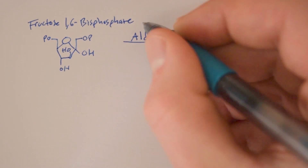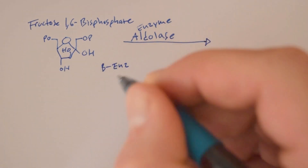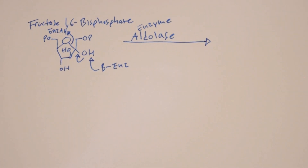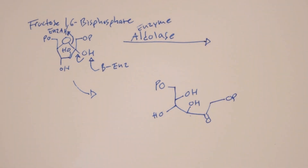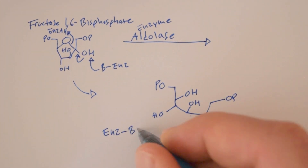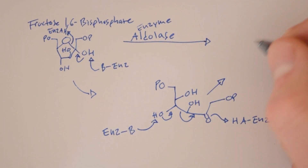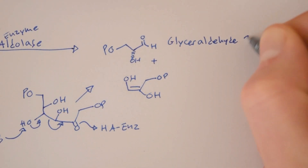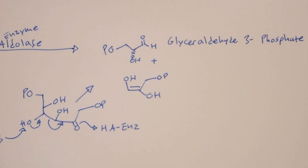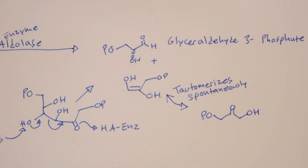Next, we have the enzyme aldolase. And after a step, we go to two products this time: glyceraldehyde 3-phosphate, which is what we're after, and another molecule that tautomerizes spontaneously, which is called dihydroxyacetone phosphate.